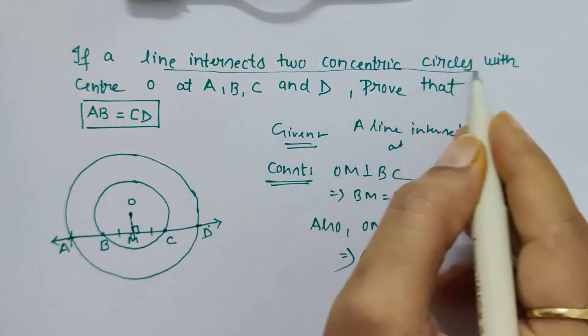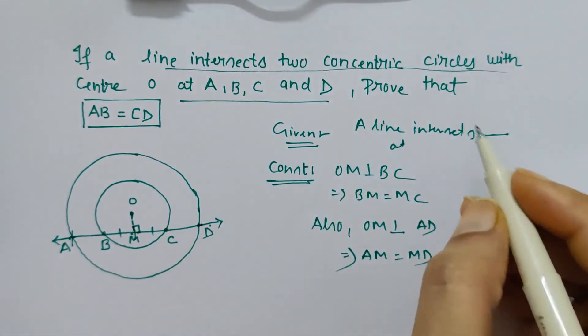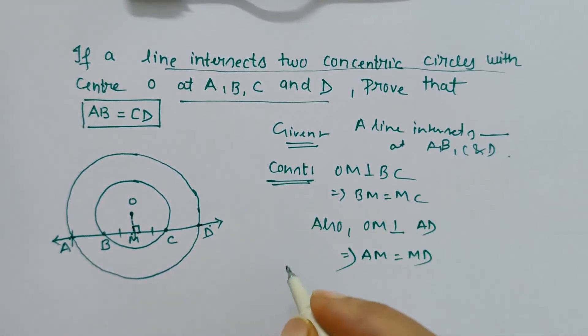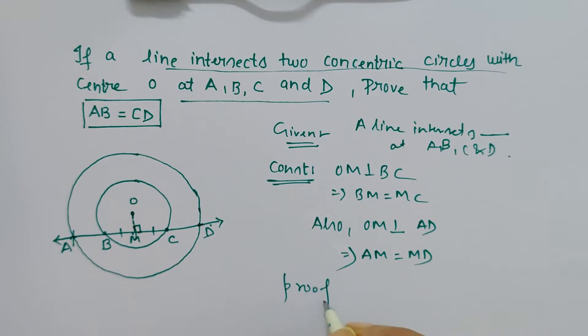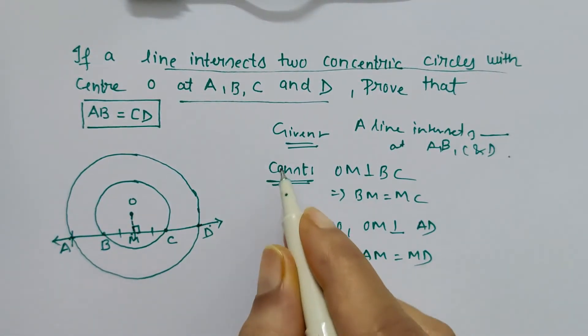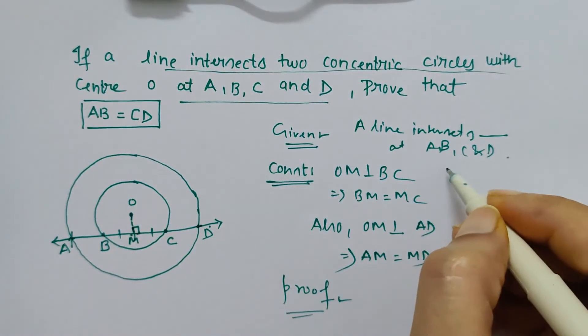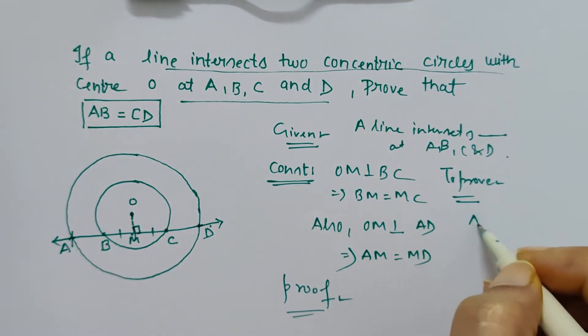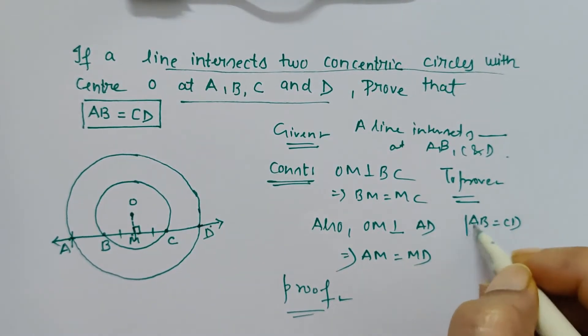In the 'to prove' section, we write what needs to be proved: AB equals CD. The structure is: given, to prove, construction, then proof.